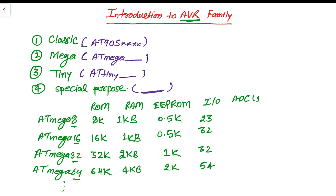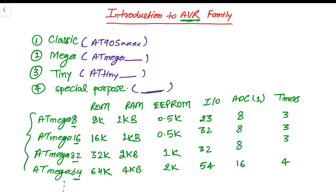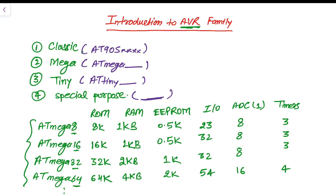Every microcontroller in the AVR family has one ADC with multiple channels. ATmega 8, 16, and 32 each have 8 ADC channels. ATmega 64 also has 8 ADC channels — I made a small mistake earlier; it is 8 channels, not 16. For timers: ATmega 8, 16, and 32 each have 3 timers, while ATmega 64 has 4 timers.